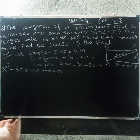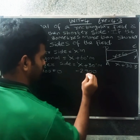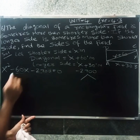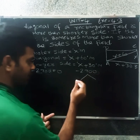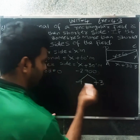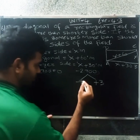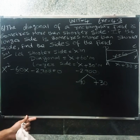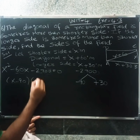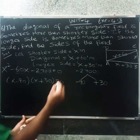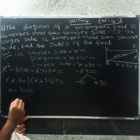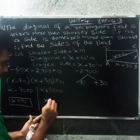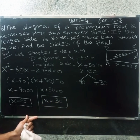Simplifying further: x² minus 60x minus 2700 equals 0. Factoring: we need two numbers that multiply to minus 2700 and add to minus 60 — those are minus 90 and plus 30. So (x minus 90)(x plus 30) equals 0. Therefore x minus 90 equals 0 giving x equals 90, or x plus 30 equals 0 giving x equals minus 30.